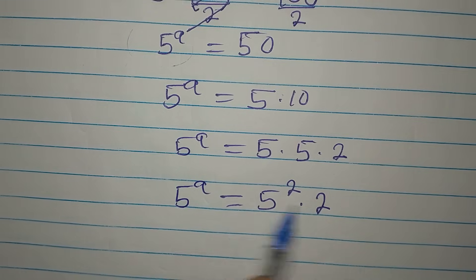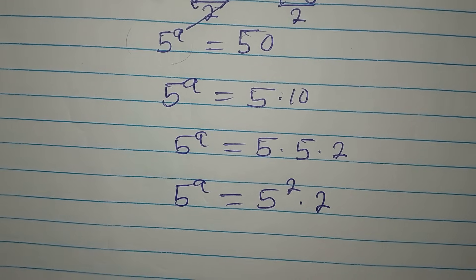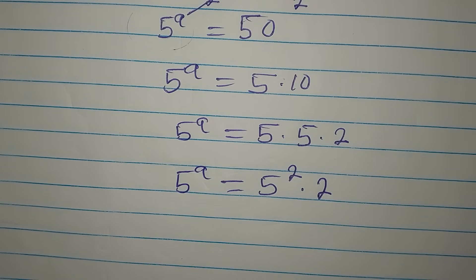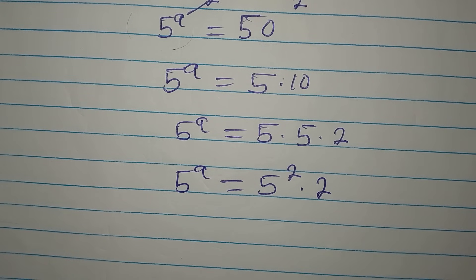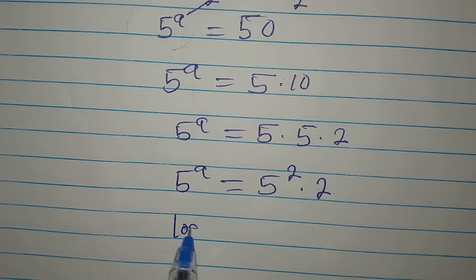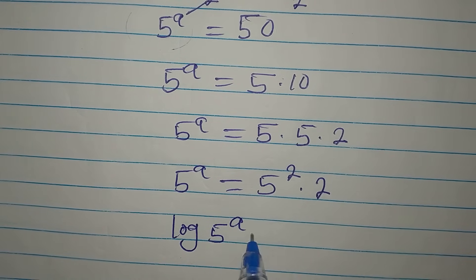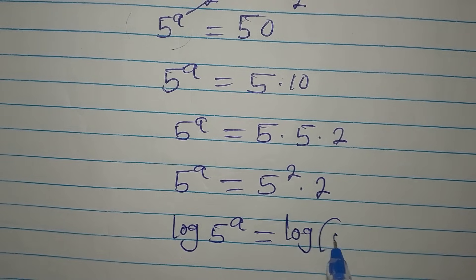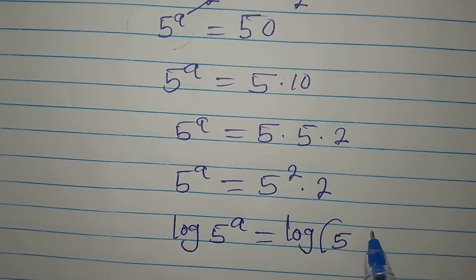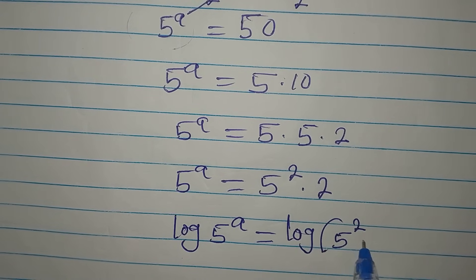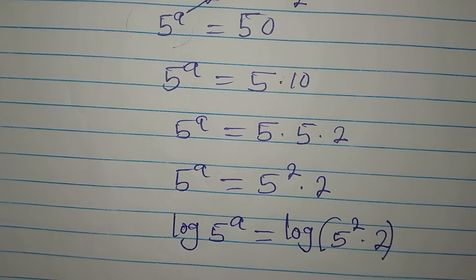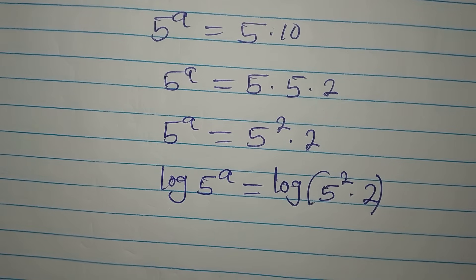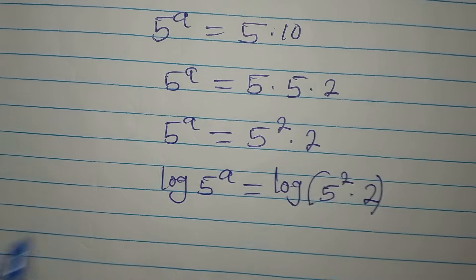That is the best way to write 50 in this form. So the best thing to do is to take the log of both sides. We now have: log of 5 to the power of a equals log of 5 squared multiplied by 2.